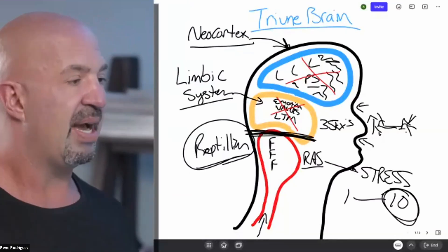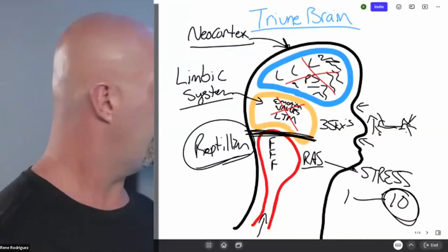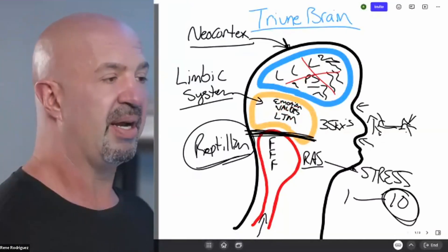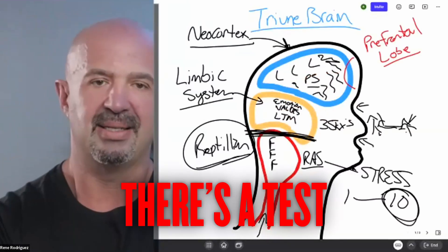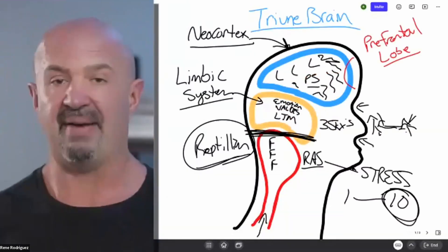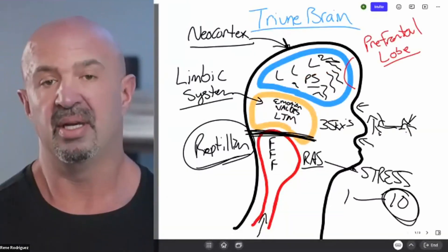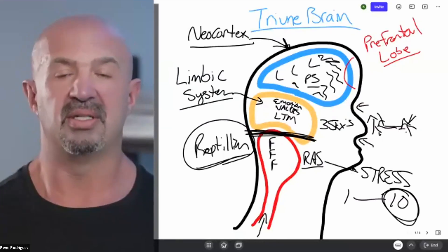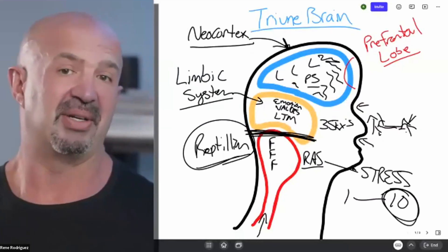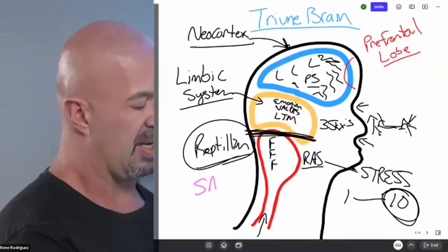For us to be able to do that, we have to be able to answer a question. If we want access to these parts of the brain and bring them back to life, there's a test that each of these brains asks. You have to be able to answer each one of those questions to be able to go further through it.